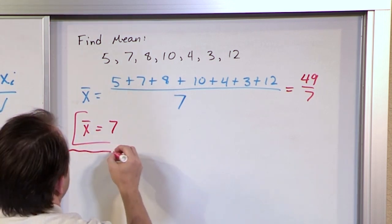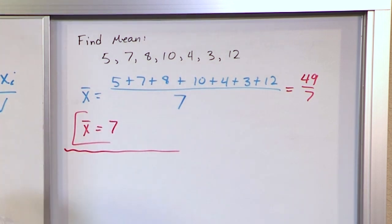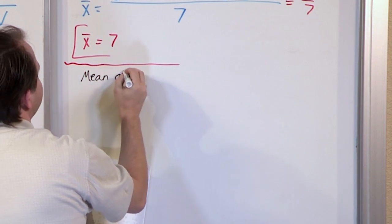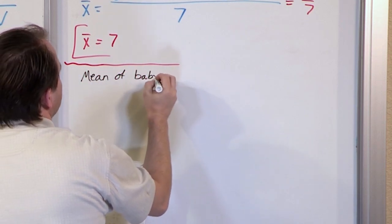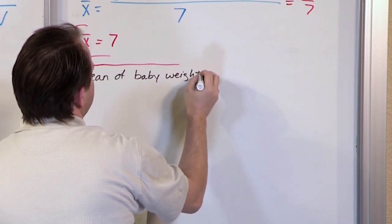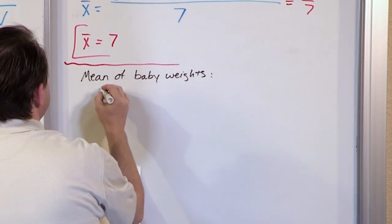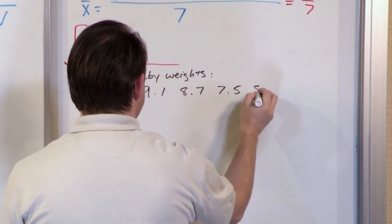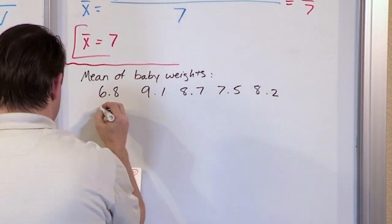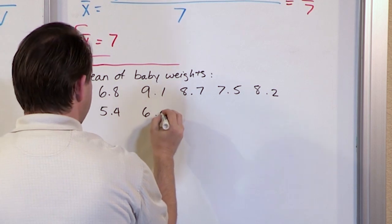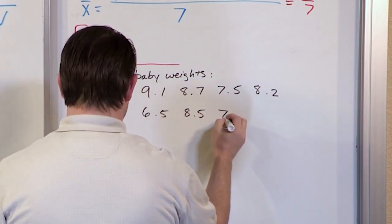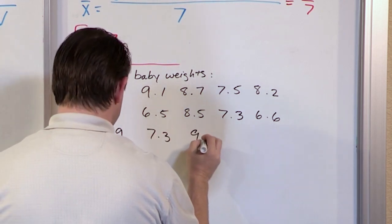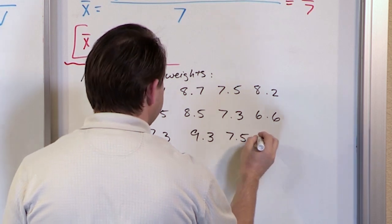For the next problem, it's basically more of the same, just giving you a little more practice. Find the mean of the following baby weights: 6.8, 9.1, 8.7, 7.5, 8.2, 5.4, 6.5, 8.5, 7.3, 6.6, 5.9, 7.3, 9.3, 7.5, 7.5, and 7.8.